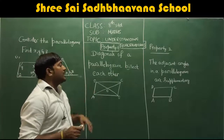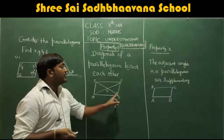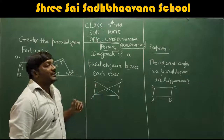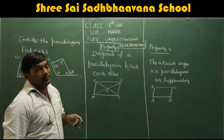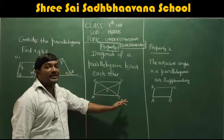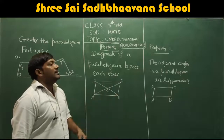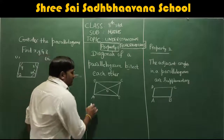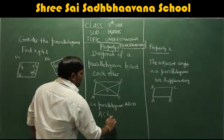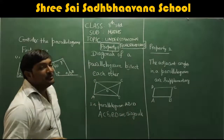Now, what are the diagonals? A diagonal is a line segment formed by joining the opposite vertices. For the parallelogram ABCD, what are the opposite vertices? A and C are opposite, B and D are opposite — because AB, CD and AD, BC are adjacent sides. When you join opposite vertices, the line segment formed is called a diagonal. So in parallelogram ABCD, AC and BD are the diagonals.